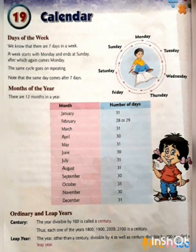So, children, a calendar is the record of all the dates and days of a year. Now, children, what is an ordinary year and a leap year? I have told you earlier, but we will explain it more.